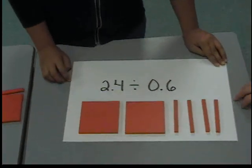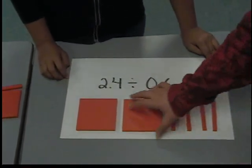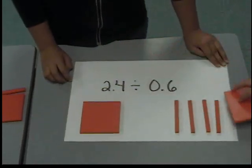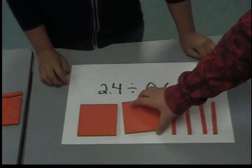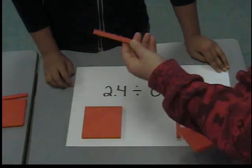Now, we'll be making one of our side lengths 0.6, but we can't do that because this is larger than 0.6, so we'll have to trade it in for 10 of these.